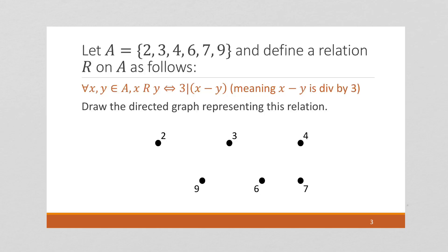And what we're saying is that two elements, X and Y, are related if and only if the X minus Y is divisible by 3. And again, there's two ways we can write that. Either way works.